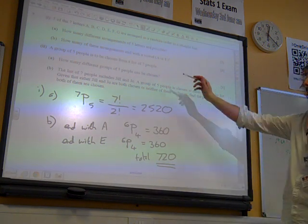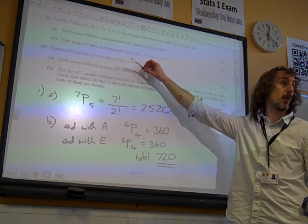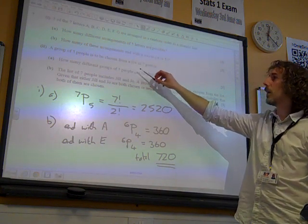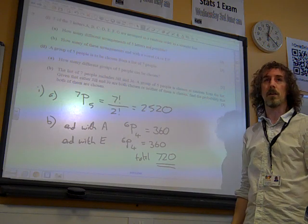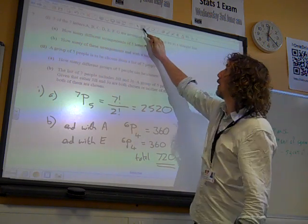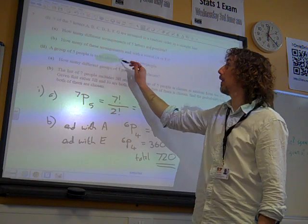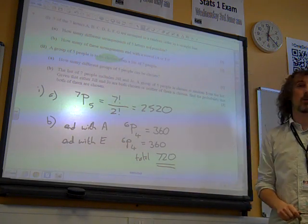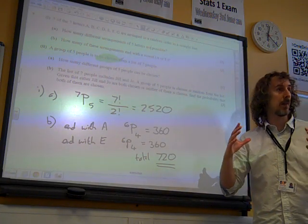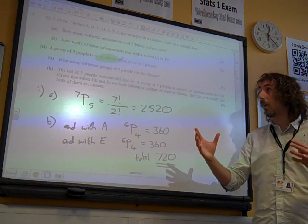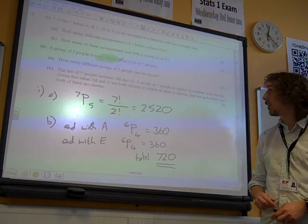A group of five people chosen from a list of seven. Now, as soon as we see that word chosen, this is telling us the order that we arrange them doesn't matter at all. So, they're just going to be selected. They don't have to stand in a line. How many different groups of five people can be chosen?